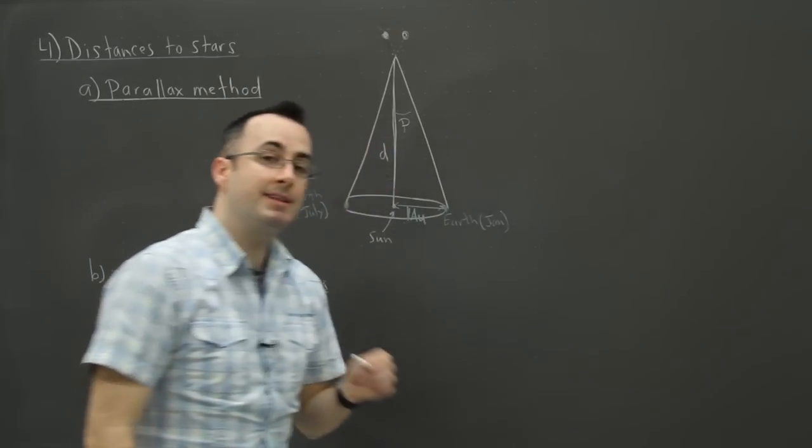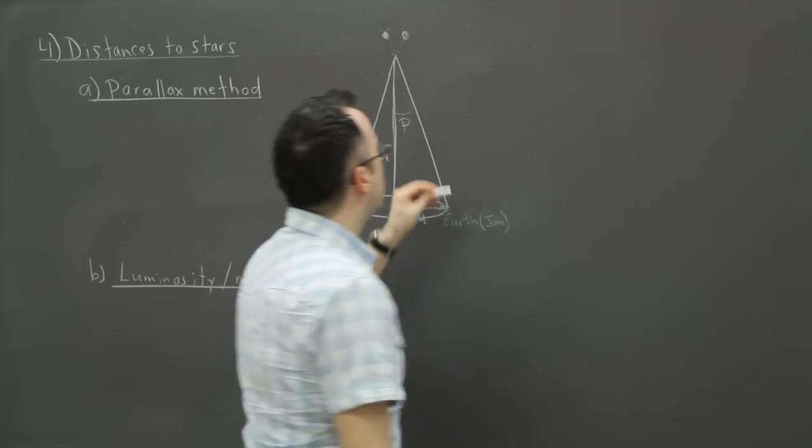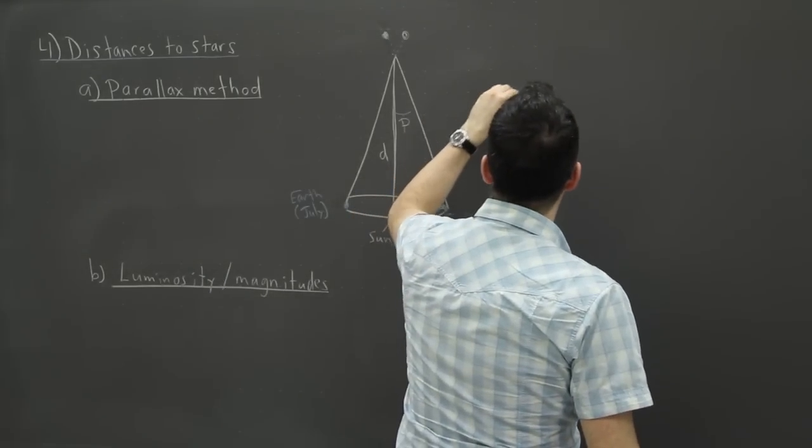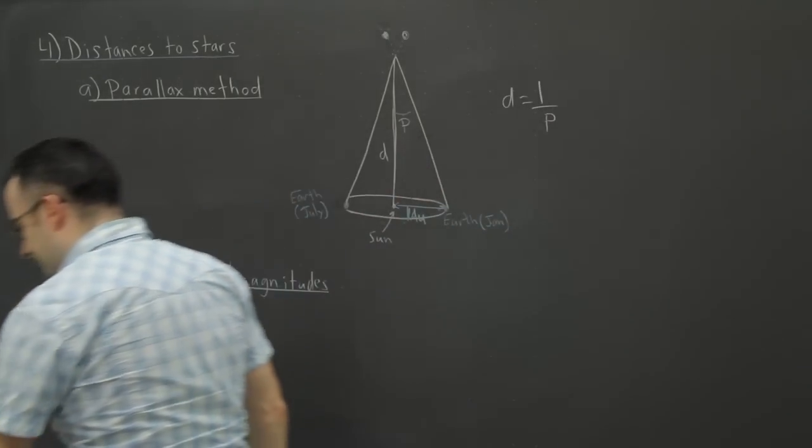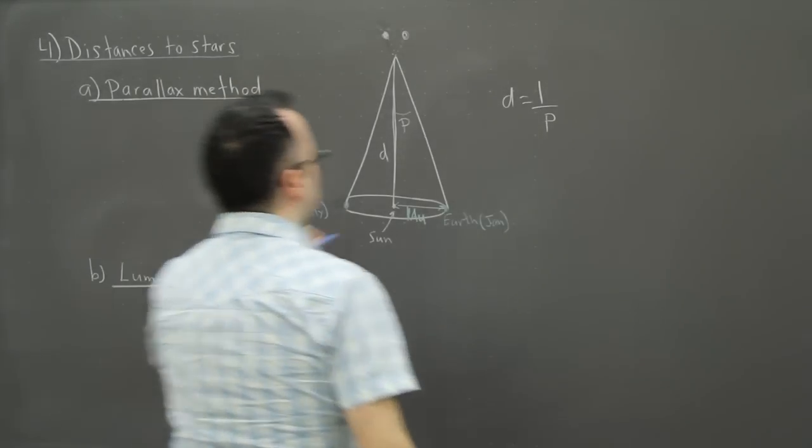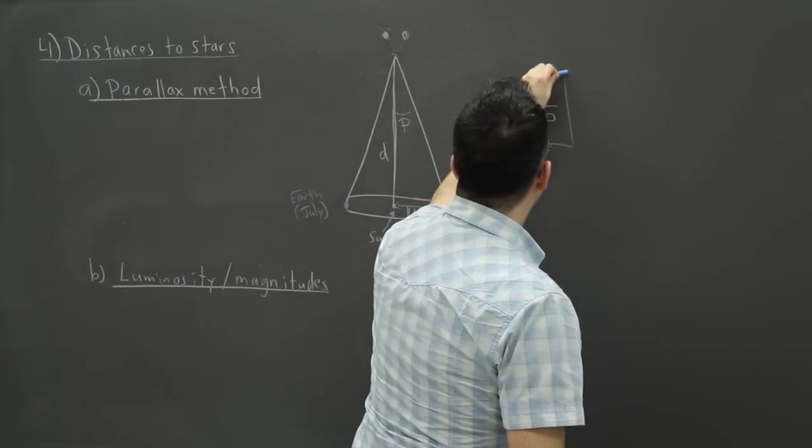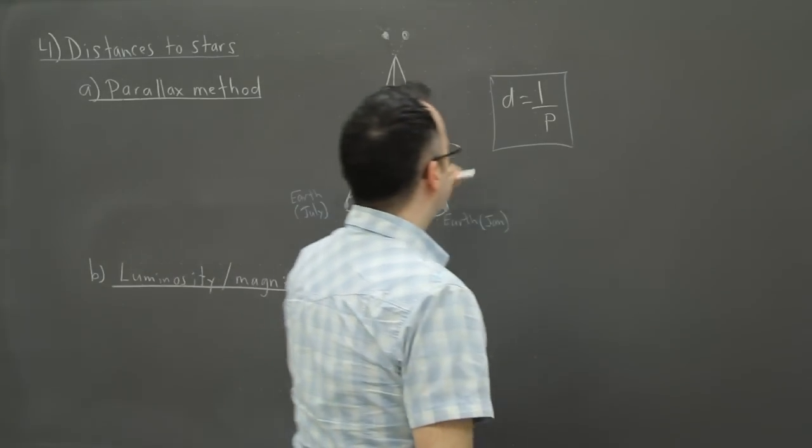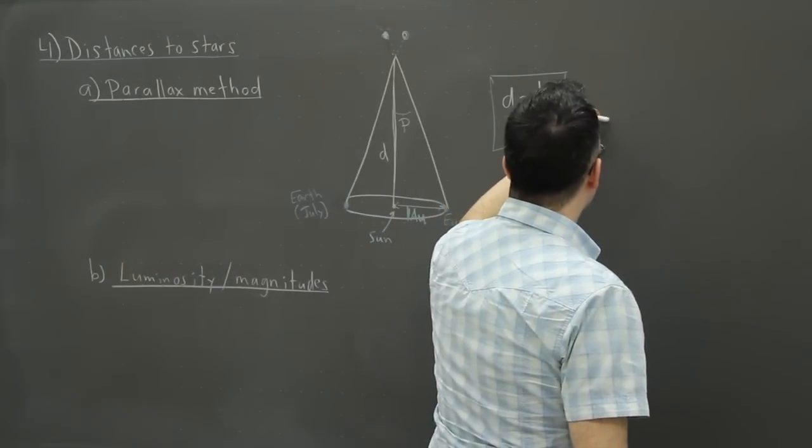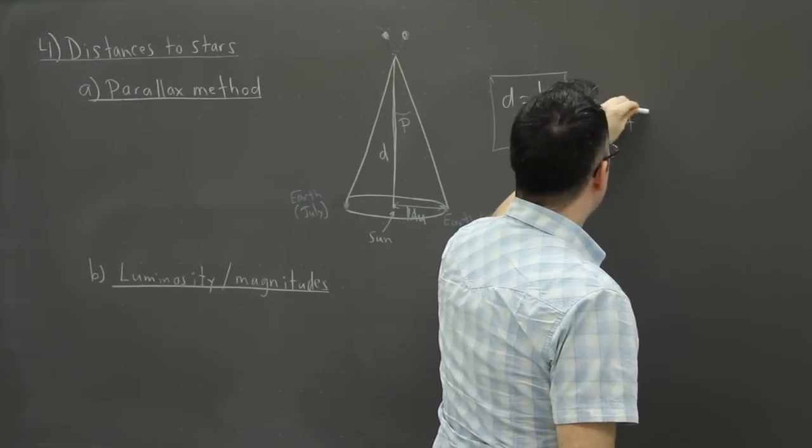Then you can write this equation, and this is the one that's in your data booklet: D equals 1 over P. That's the equation, and it's important to know what units we use for this. D is the distance to the star, but it's measured in parsecs.